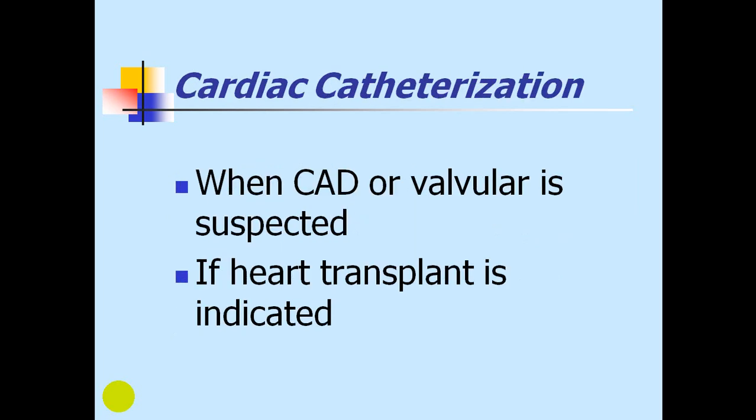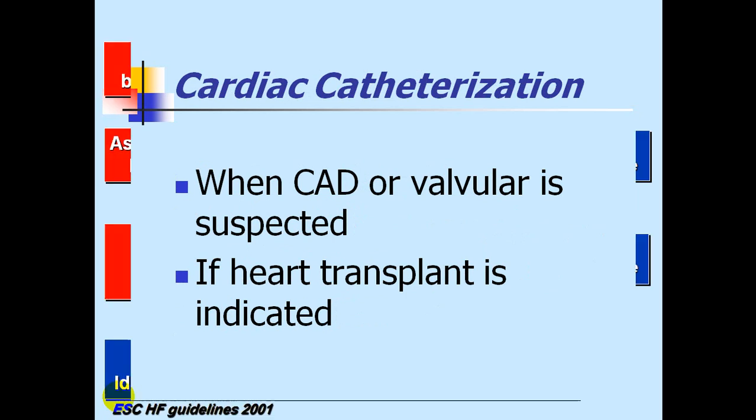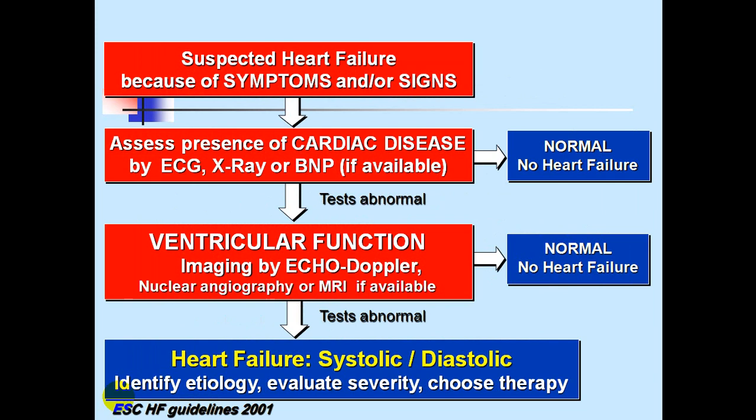Cardiac catheterization is indicated if valvular or coronary artery disease is suspected, or if cardiac transplant is being considered. The diagnostic algorithm: if a patient has symptoms or signs of heart failure, perform ECG, chest X-ray, BNP or pro-BNP. If normal, heart failure is unlikely. If abnormal, proceed to imaging — echocardiography, nuclear angiography, or MRI if available. If imaging is normal, heart failure is unlikely; if abnormal, characterize as systolic or diastolic by echo, identify etiology, evaluate severity, and choose appropriate therapy.